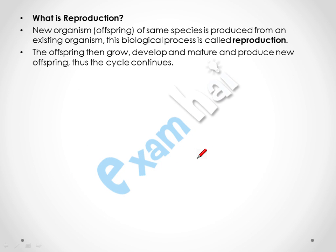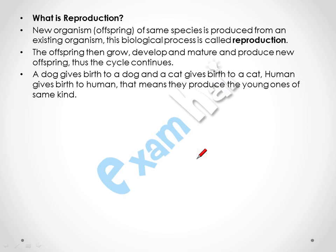So what is reproduction? When an existing organism produces a new organism of the same species, this whole biological process is called reproduction. The new organism, or offspring, then grows, develops, and matures to produce new offspring, and thus the cycle continues.